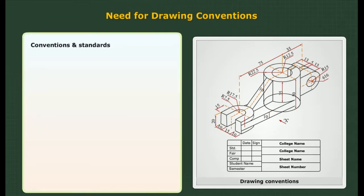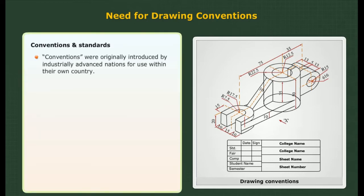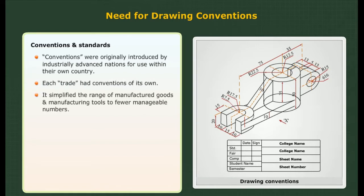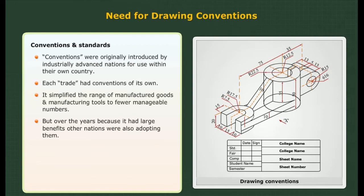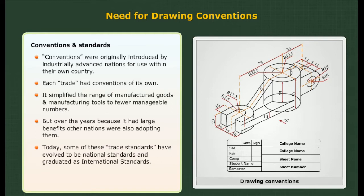Conventions and standards: these conventions were originally introduced by industrially advanced nations for use within their own country. Each trade had conventions of its own, which simplified the range of manufactured goods and manufacturing tools to fewer manageable numbers. Over the years, because of the large benefits, other nations also adopted them. Today, some of these trade standards have evolved to become national standards and then graduated to international standards.